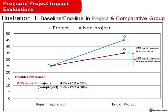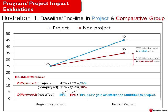Both of these calculations represent the first difference in the double difference: a 20 percentage point gain in the project group and a 10 percentage point gain in the control group. To calculate the net change or pure effect of our project, we do the second difference — subtracting the control group's gain from the project's gain. Taking the 20 percentage point gain and subtracting the 10 percentage point gain in non-project areas gives us a pure project effect of 10 percentage points, not the 20 we originally calculated.